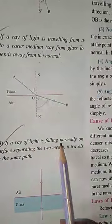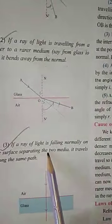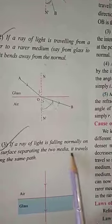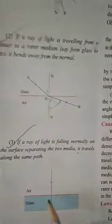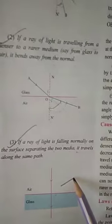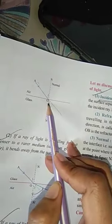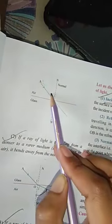This means that the light is falling normally on the surface separating the two mediums. We have a rare medium and then a denser medium — sorry, a glass medium. The incident ray is the ray that is falling onto the medium.